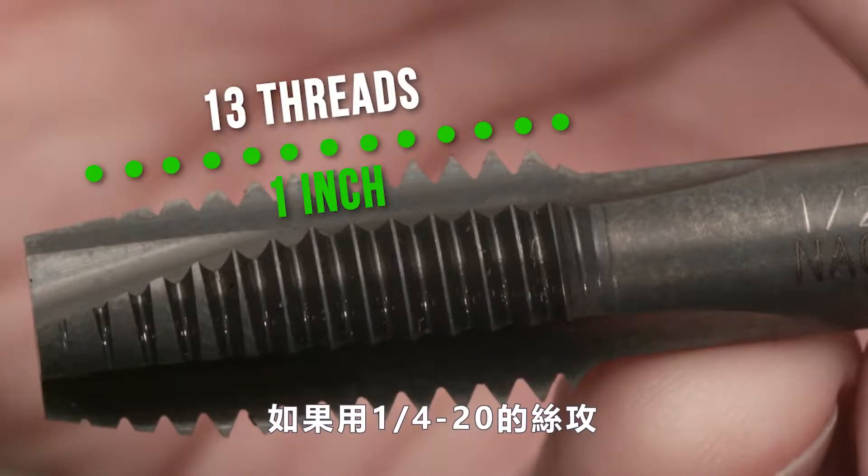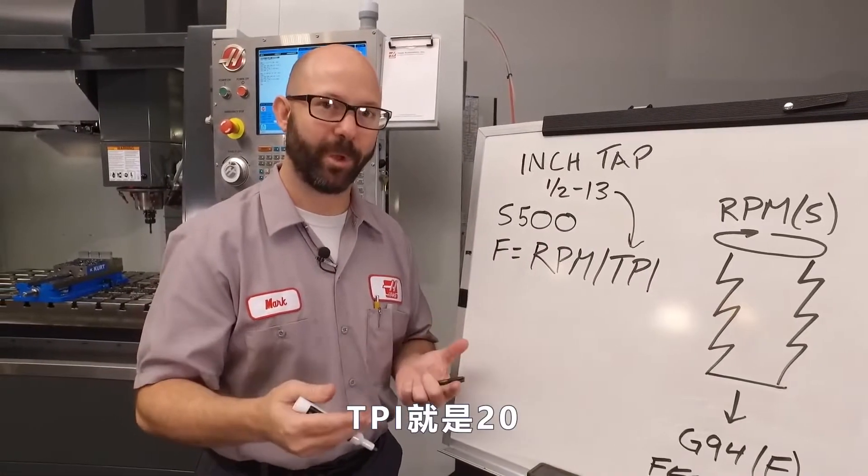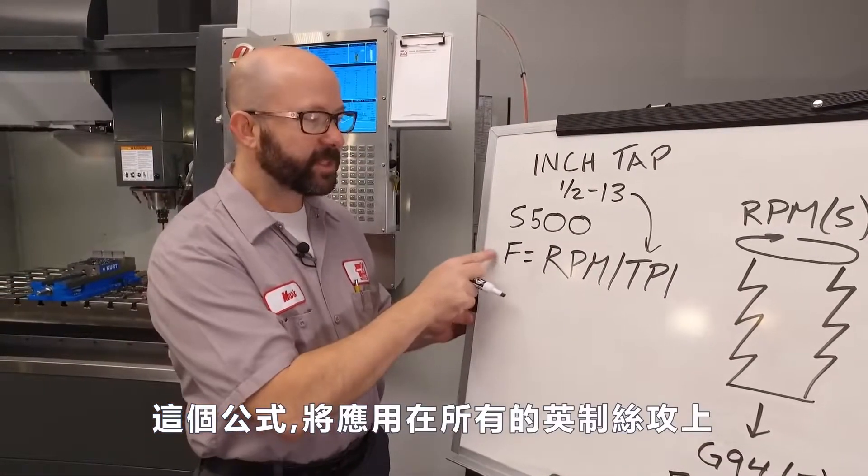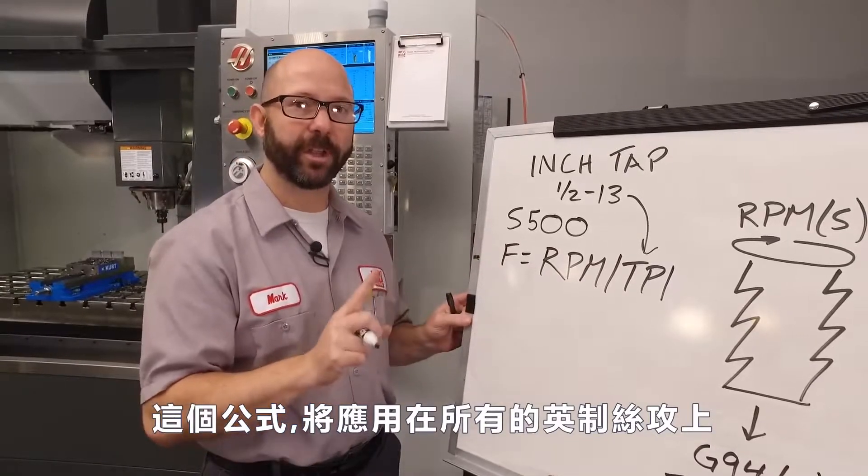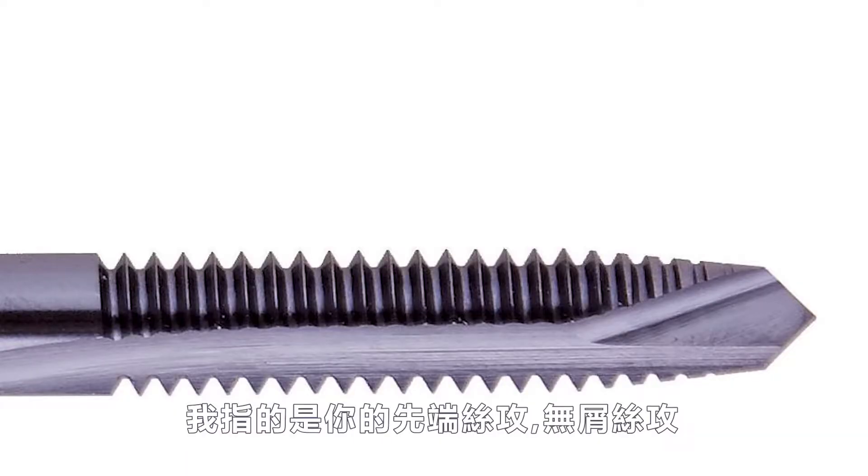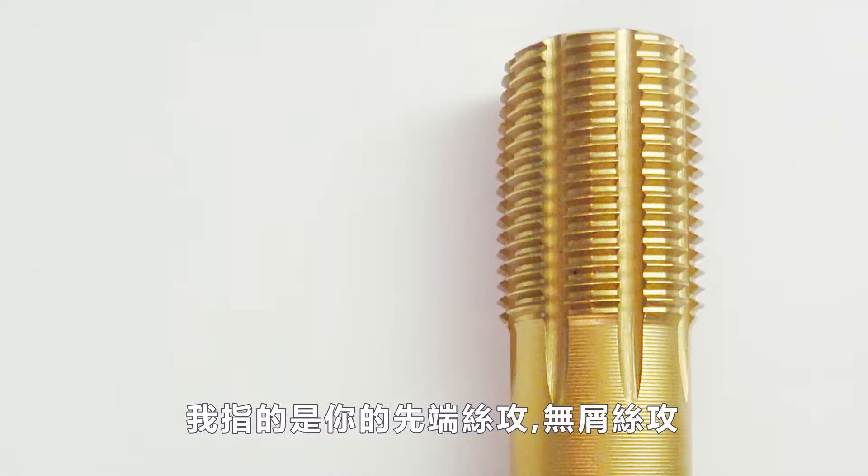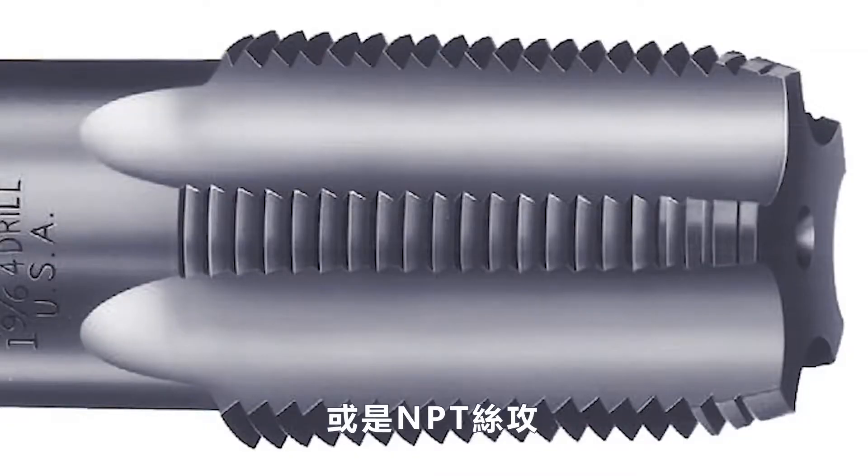If we were using a quarter 20 tap, our TPI would be 20. This formula is going to work for all of your inch taps. I'm talking about your cutting taps, your form taps, and even those NPT taps.